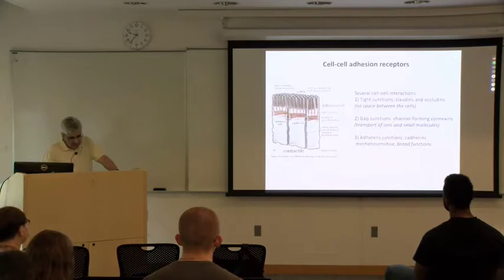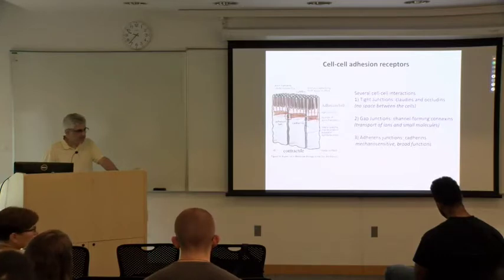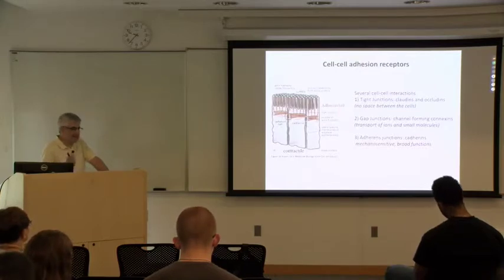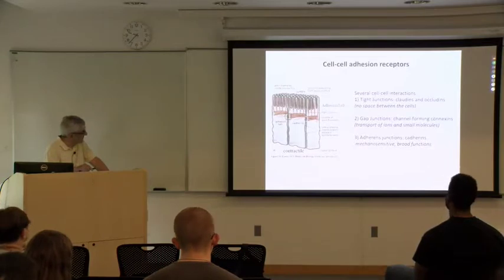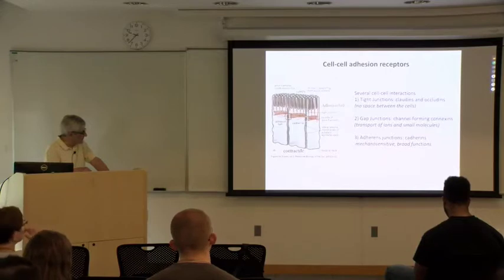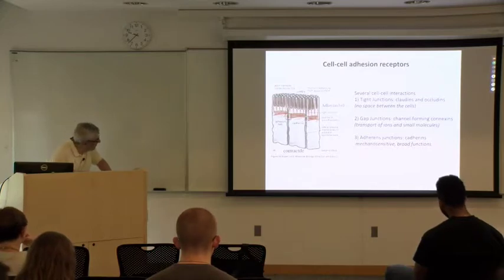Now I want to talk about a different category. Cells talk to each other through adhesion receptors, not only to the ECM. There are several receptors that mediate cell-cell adhesion: tight junction proteins, which make for a very tight junction with almost no space between cells; gap junctions, which are usually channels that transport ions and molecules; and then adherens junctions, which is what we're going to talk about today, composed of cadherins as a mechanosensitive protein involved in development and proliferation.